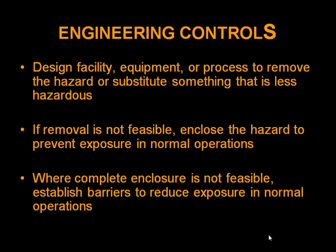Once you've considered whether or not you can eliminate or avoid the hazard and you've abated to the degree possible, the next step is to consider engineering the problem out of the system. Can you design the facility, redesign equipment, look at the process, and remove hazards or substitute something with less hazard through design? Can you remove what is feasible to remove? And if you cannot, can you enclose it in some fashion to prevent exposure in a normal operation? One example of this would be machine guarding. Where complete enclosure is not feasible, the establishing of barriers to prevent exposure to the hazard — the barrier might be in time and distance, time and space — in order to prevent contact with the hazard.